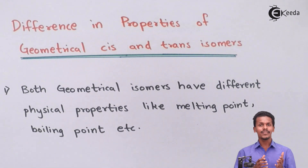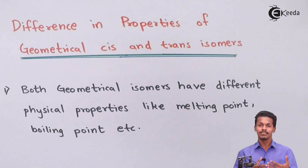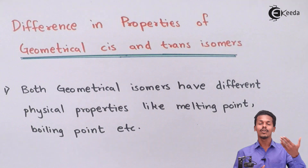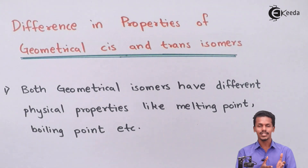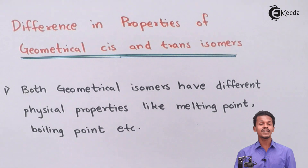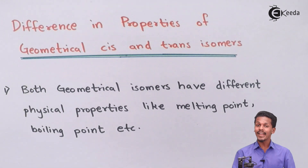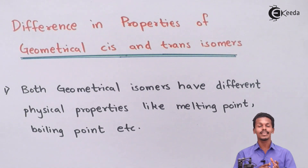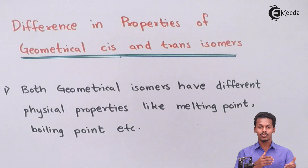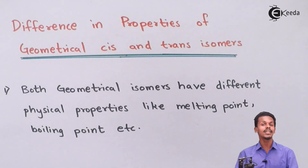For example, in a cis isomer both the bulkier groups — or both the atoms — are on the same side. Whereas in a trans isomer, the groups or atoms are attached on opposite sides of each other. That is why they are called trans isomers in terms of geometrical isomers.